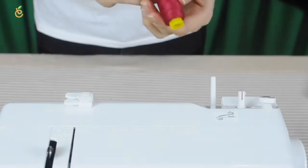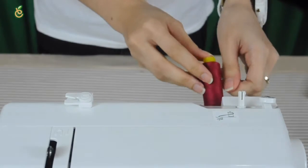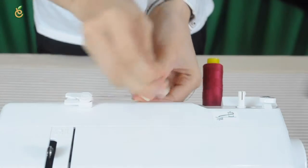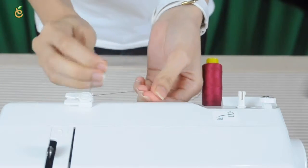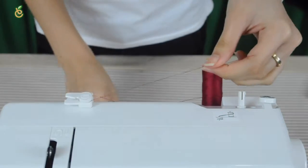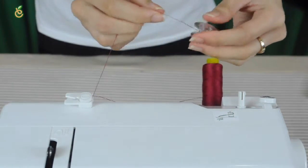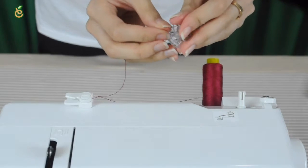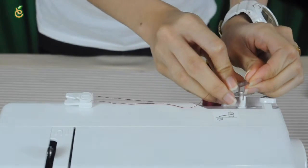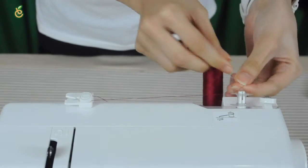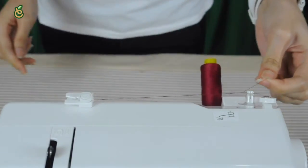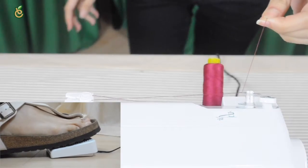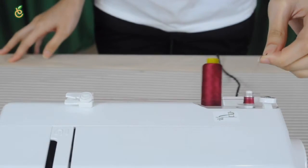Draw the thread from the spool. Guide the thread around under the thread guide. Draw out the thread from the notch and pass it under the disc. Thread through the hole in the bobbin from the inside to the outside. Put the bobbin onto the bobbin winder spindle and push the bobbin to the right. With the free end of the thread held in your hand, depress the foot switch.